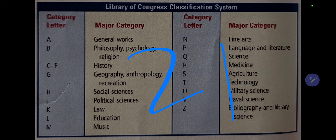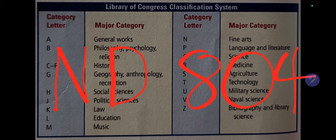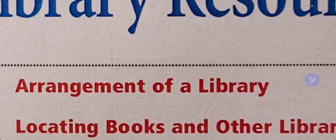Like the Dewey Decimal System, the LC has subcategories identified by additional letters and numbers. For example, a book about art would be labeled N. If you want a book about paintings, you would use ND for fine arts and painting. To narrow further, you add numbers — for example, Spain would give you the LC classification number ND804.